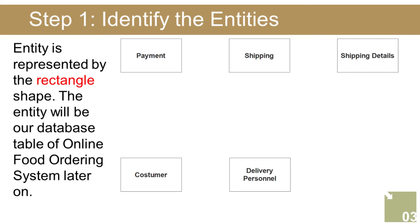Step 1: Identify the entities. The entities will be our database tables of the shipping management system later on. In the shipping management system we have the following entities: customer, shipping, shipping details, delivery, and personnel payment. Following our model, the shipping management system consists of five components or entities. These components will be the tables that make up our database schema. In the following diagram, you can see the various entities that are part of the shipping management system.